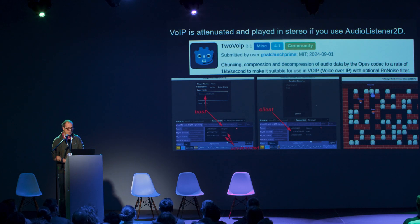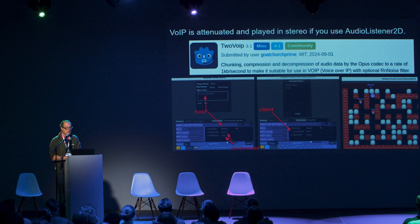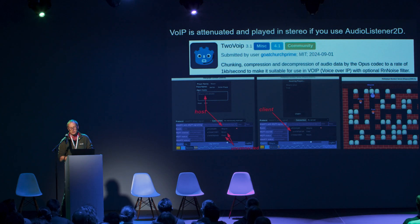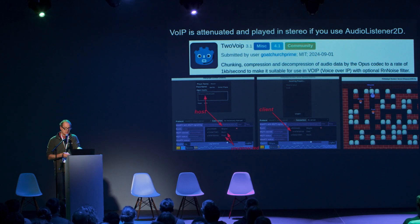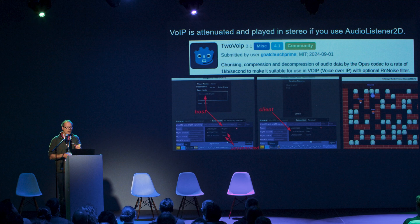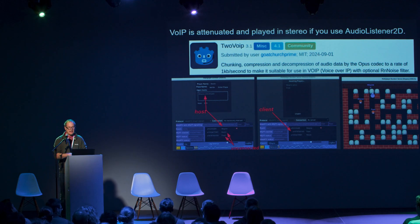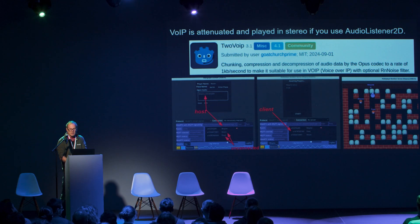In the last few months I've also added voice-over-IP, which plugs straight into this. It's working pretty well. The compression rate is down to about 900 bytes per second when talking, and it has noise filters. You can download it from the asset library with no effort, and I think it's safe to use now.